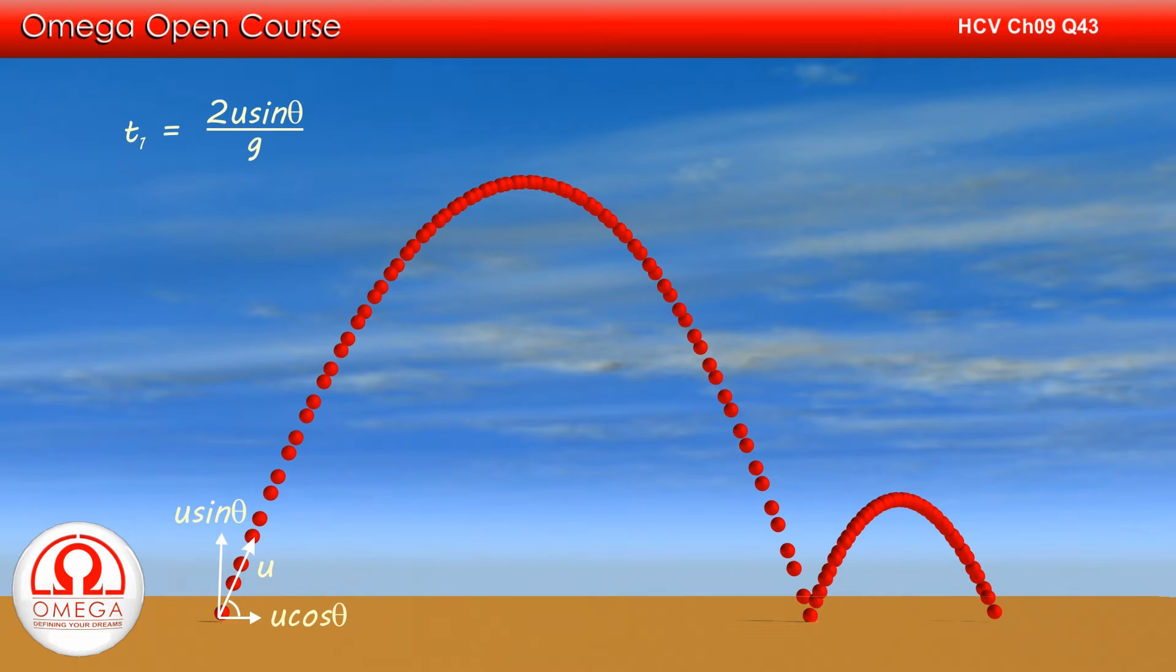we know that the time the ball takes before colliding with the field for the first time is given by 2u sin theta divided by g. Since in projectile motion the horizontal speed remains constant, the horizontal speed of the projectile just before the collision is u cos theta. Also, the vertical speed just before the collision is u sin theta in downward direction.